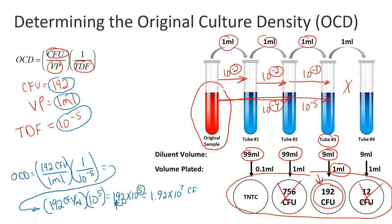Don't forget your units: CFU per milliliter. This is the answer. The original culture density—the cells per ml or CFUs per ml in this tube, the original tube—is 1.92 times 10 to the seventh colony forming units per milliliter.